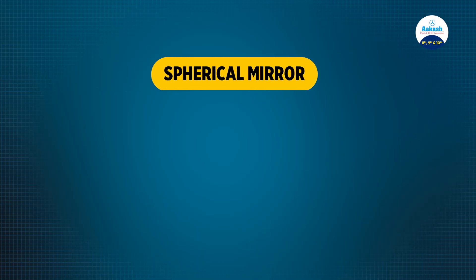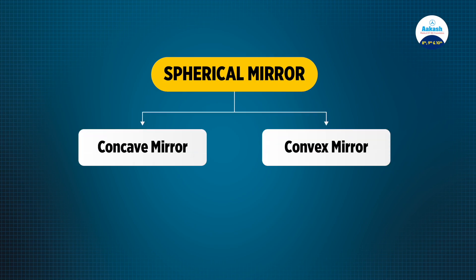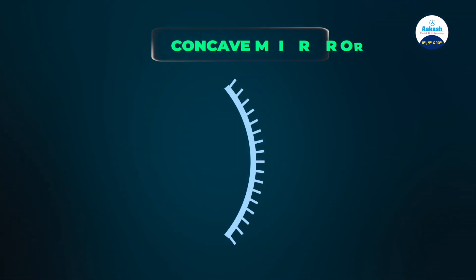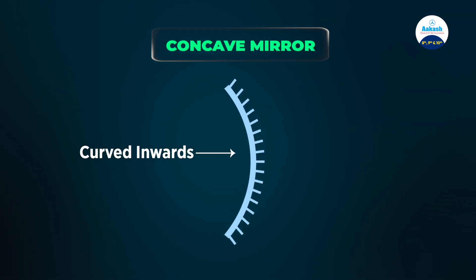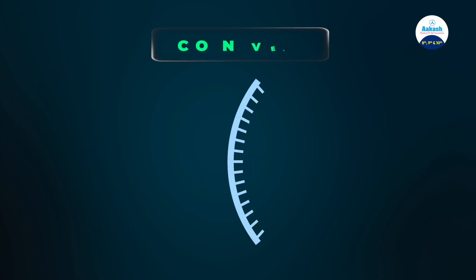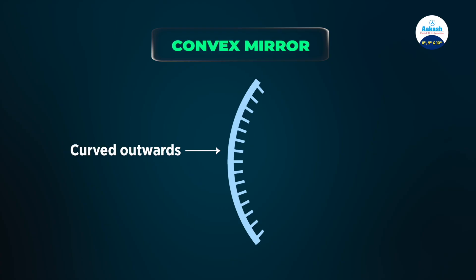The second category is the spherical mirror, which has two types: the concave mirror and the convex mirror. In a concave mirror, the reflecting surface is curved inwards, and the nature of the image can be virtual and erect or real and inverted. In a convex mirror, the reflecting surface is curved outwards, and the image is always virtual and erect.